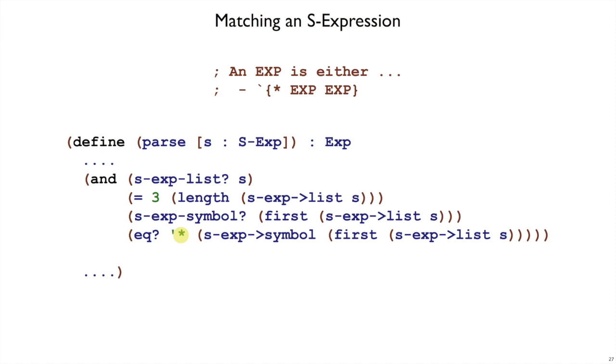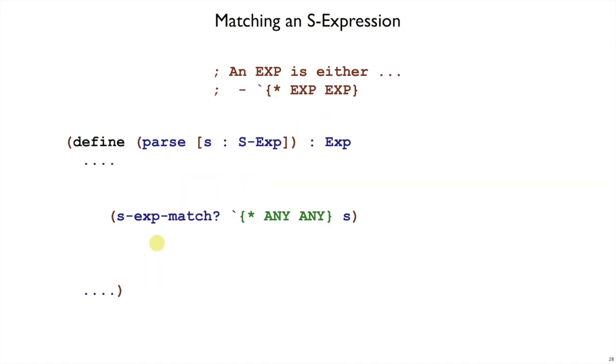And we're not done testing really. We're not done checking the shape of s because we also need to make sure that the second and the third parts are also valid expressions. This is getting very tedious just to make sure that it has the right shape and we're not even done. Fortunately, there's a helper function provided by Racket called s-exp-match?.